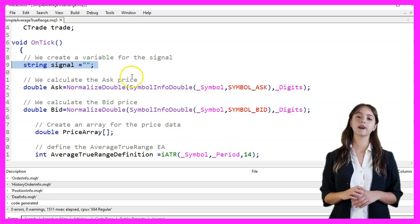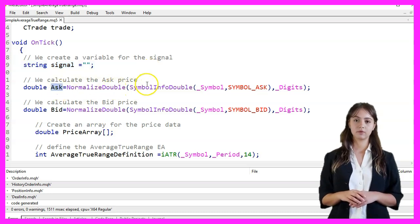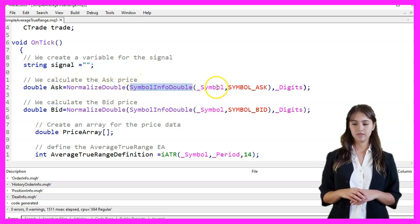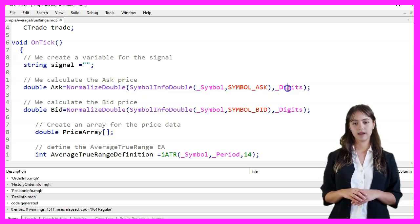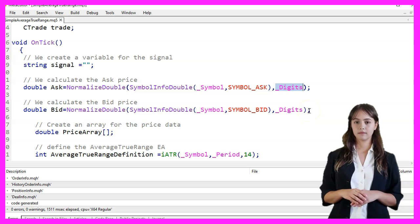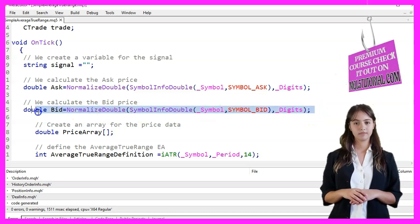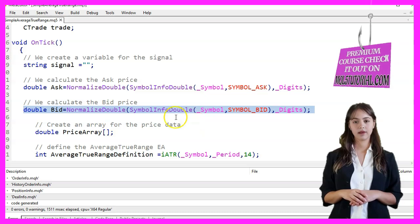We calculate the ask price using the SymbolInfoDouble function with the SymbolAsk parameter and normalize it to the number of digits specified by DoDigits. Similarly, we calculate the bid price using the SymbolBid parameter.